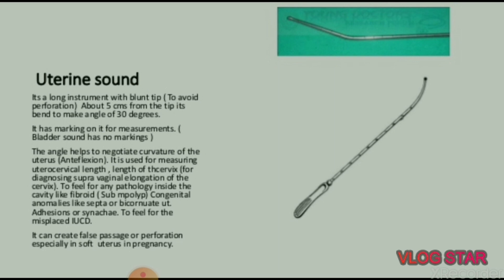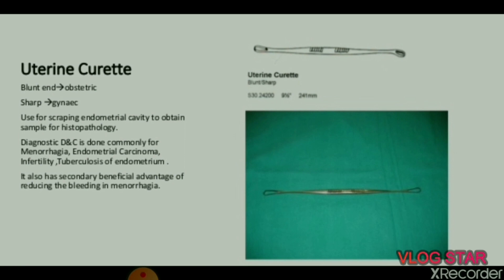Uterine sound is used for measuring utero-cervical length, diagnosing supra-vaginal elongation of the cervix, to feel any pathology inside the cavity like fibroids, polyps, congenital anomalies like septum or bicornuate uterus, adhesions, and to feel for a misplaced IUCD. It can create a false passage or perforation, especially in a soft uterus in pregnancy.